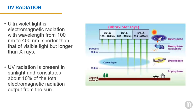Ultraviolet light is invisible light that has a shorter wavelength than visible light but longer than X-rays. UV rays are part of the electromagnetic spectrum emitted by the sun. The sun emits three types of ultraviolet radiation: UVA, UVB, and UVC. UVC radiation is blocked by our ozone layer, UVB is partially blocked, and both UVA and UVB reach the Earth's surface and can penetrate our skin. UVB rays reach the outer layer of your skin called the epidermis, while UVA rays can penetrate the middle layer called the dermis.